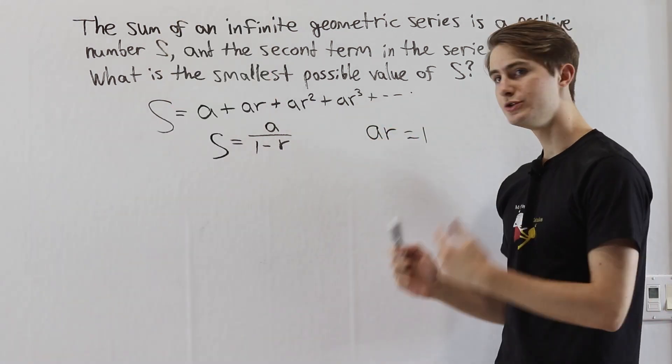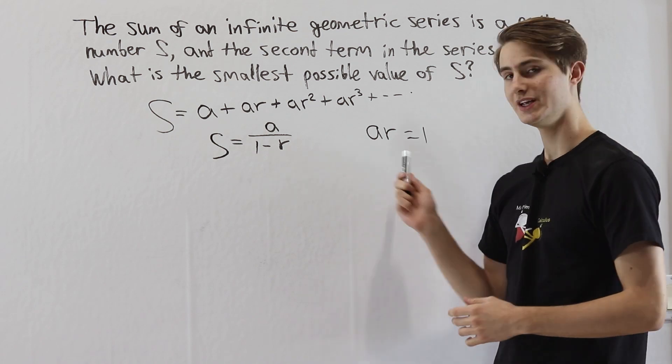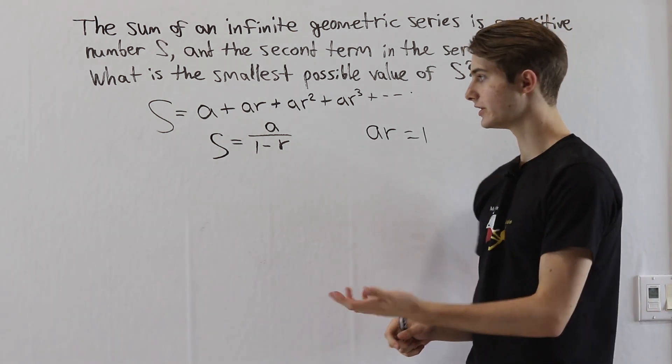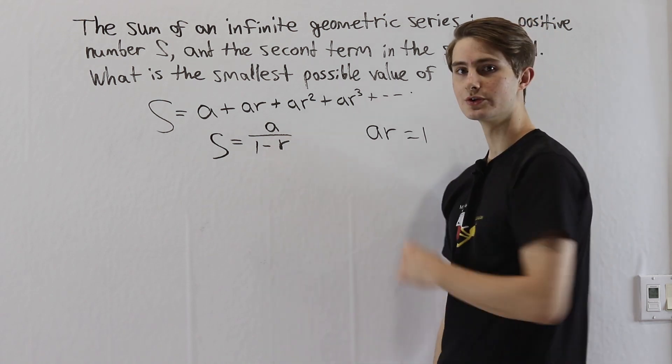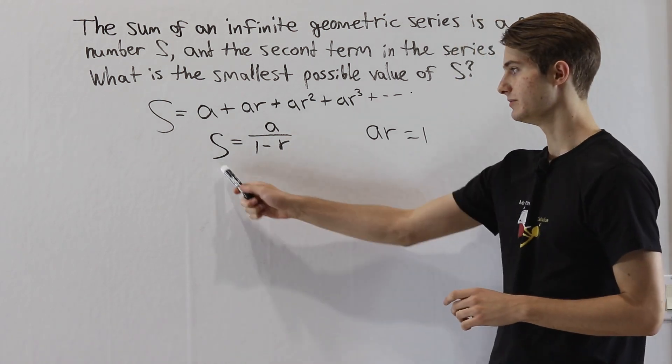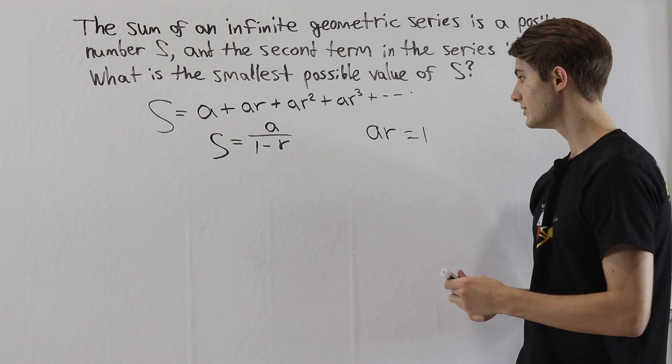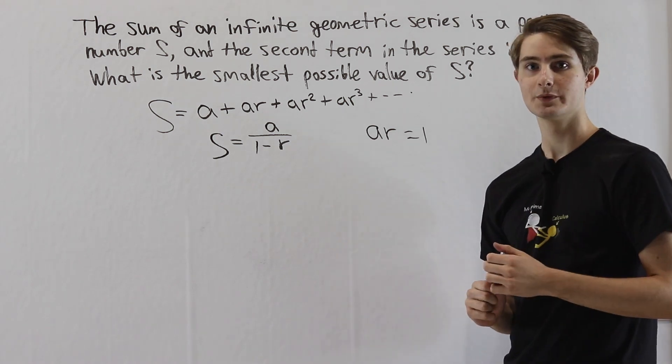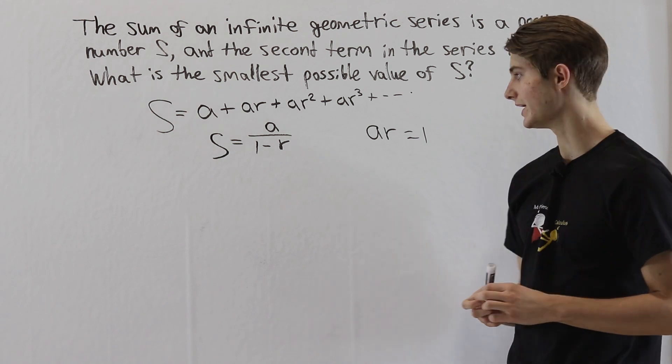What we have now are two equations for two variables, a and r. So we could choose to isolate either a or r in the equation a over 1 minus r, because we're trying to minimize that sum. So the question is, should we isolate a, or should we isolate r? Well let's try both of them and see what happens.